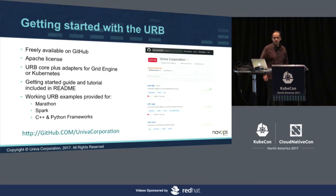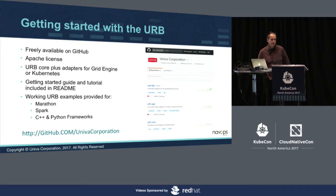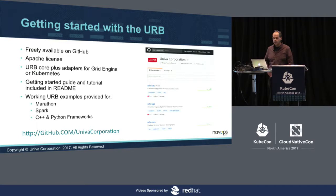If you want to get started with URB or test it, it's totally freely available on GitHub under the Apache license. At github.com/UnivaCorporation, you will see basically three repositories: one is called URB Core, which contains the core implementation of URB itself, and then the adapters — URB Kubernetes and URB Grid Engine. It comes with some README files and examples like Marathon, Spark, and so on.